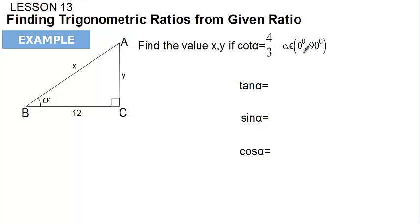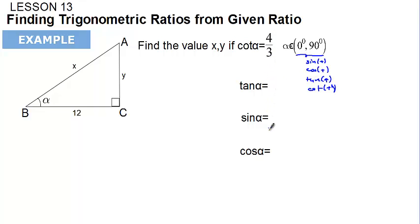We are finding the tangent and cotangent with respect to that quadrant. In the first quadrant, sine is positive, cosine is positive, tangent is positive, and cotangent is positive, so the values here are going to be positive.